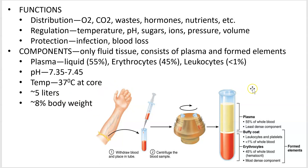This figure on the right shows how you can separate blood. If you take a blood sample, the formed elements on the bottom are heavier and more dense than the liquid, so they sink to the bottom. You can accelerate that process with a centrifuge. And that's it for the first video.